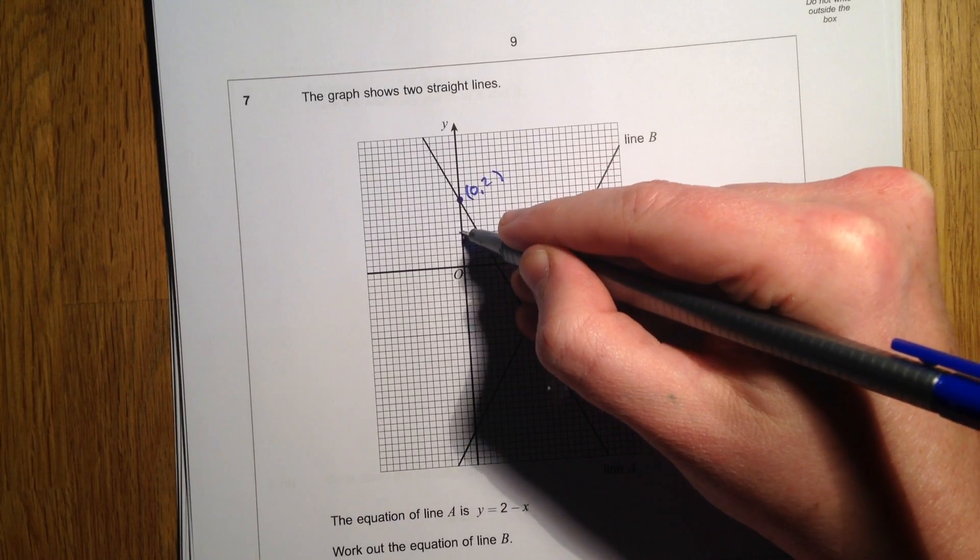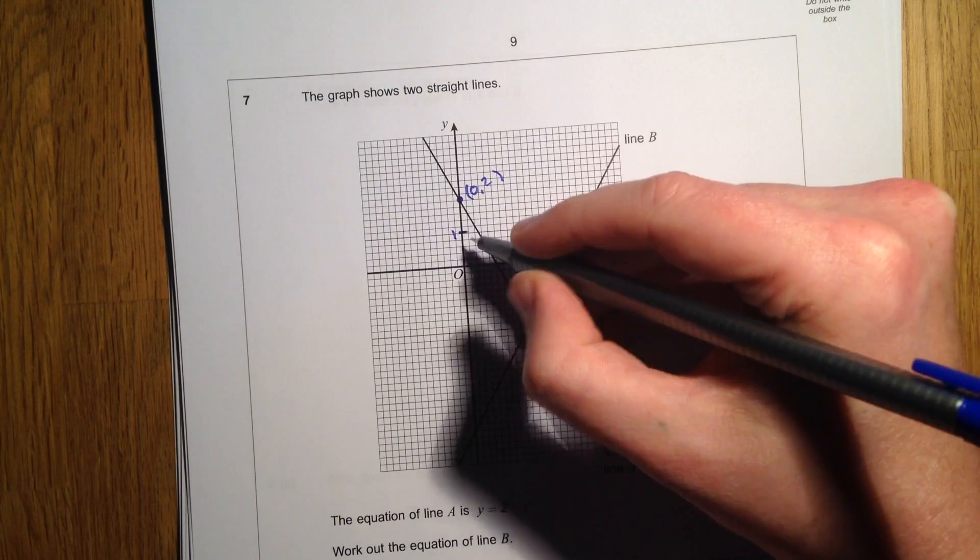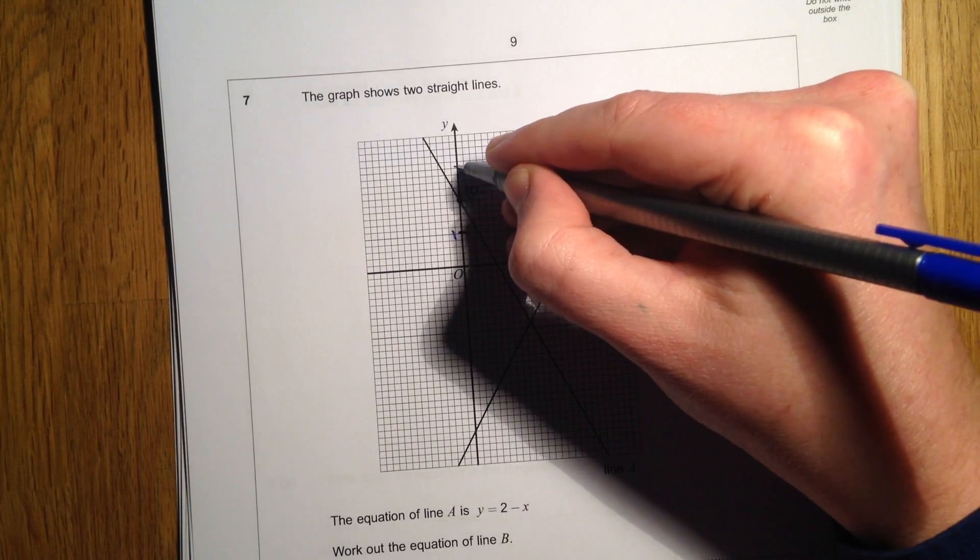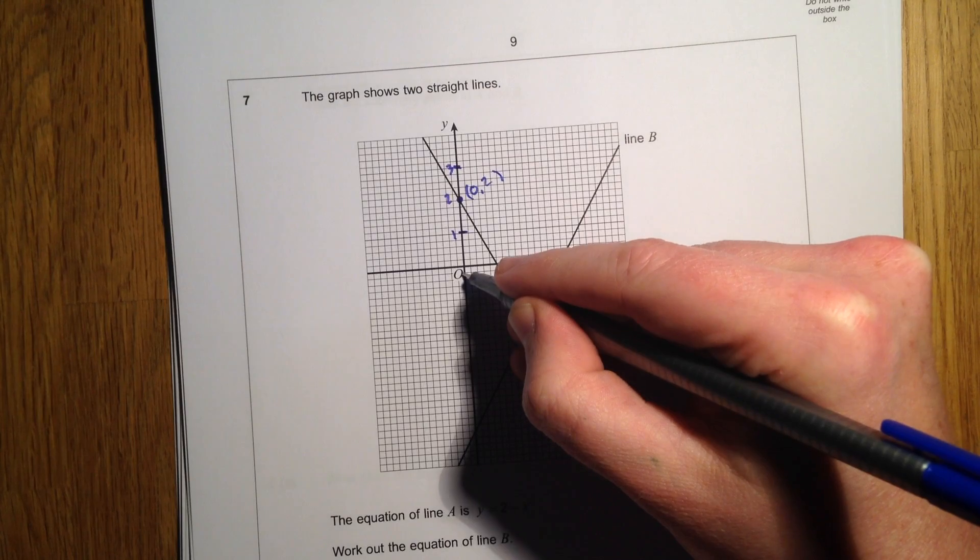So you see this coordinate up here, that is going to be the coordinate 0 something. So when x is 0, then y is 2. 2 take away 0 is 2.